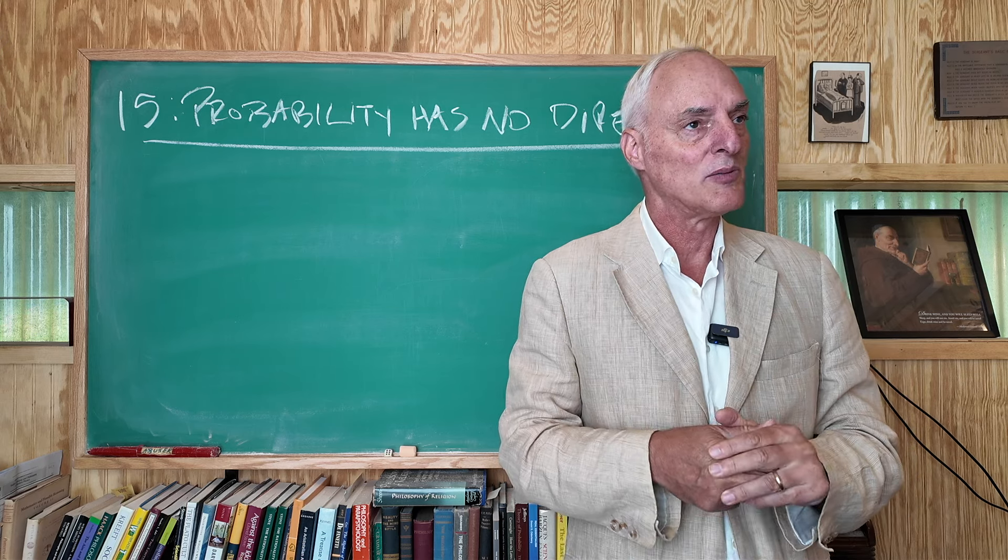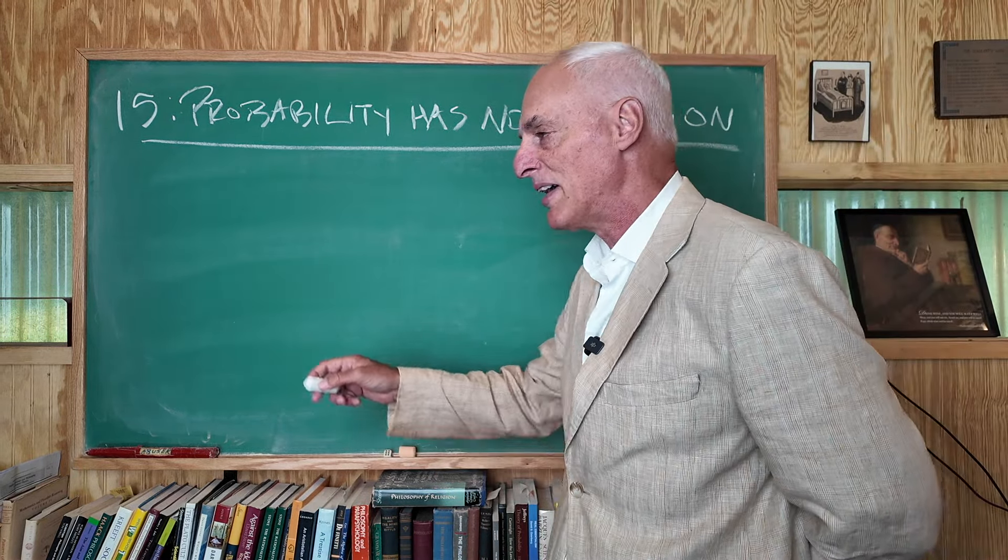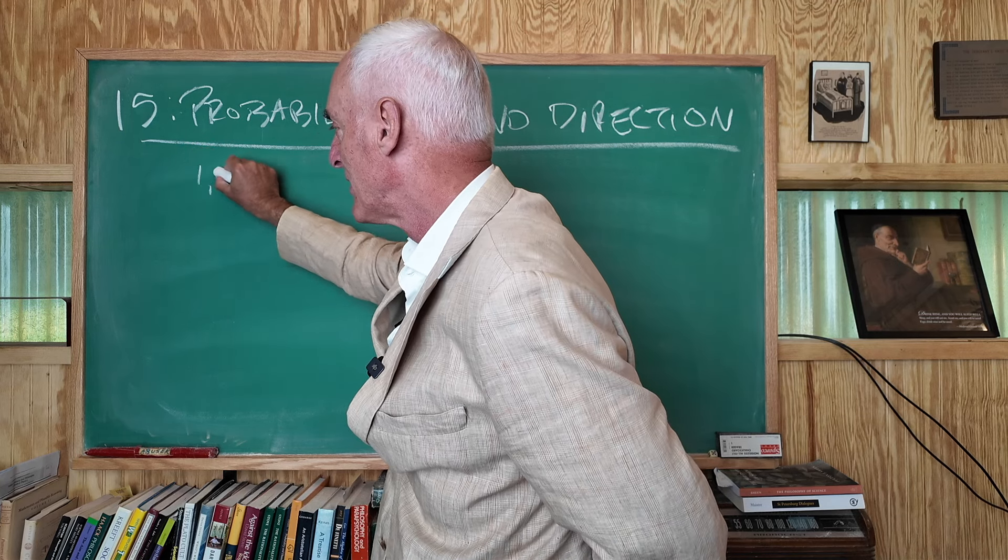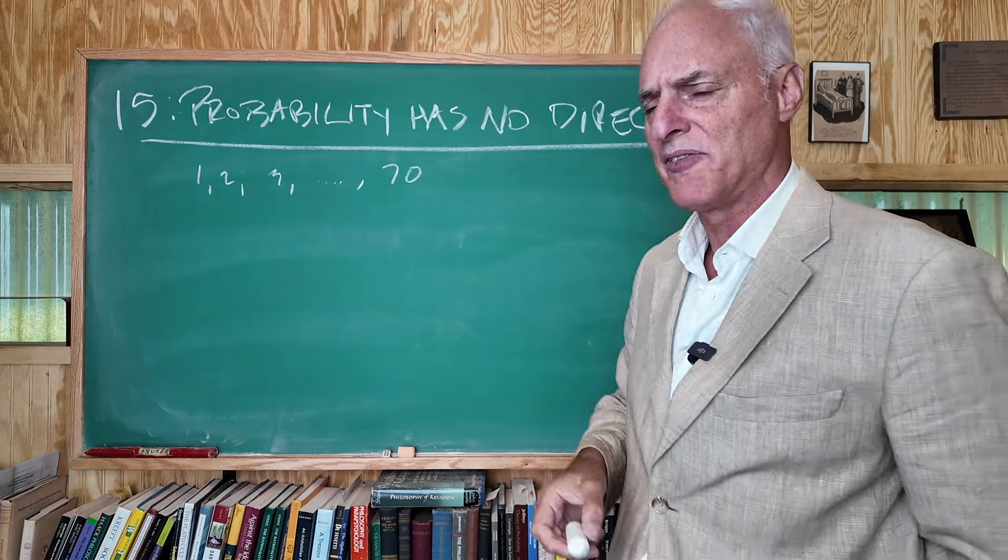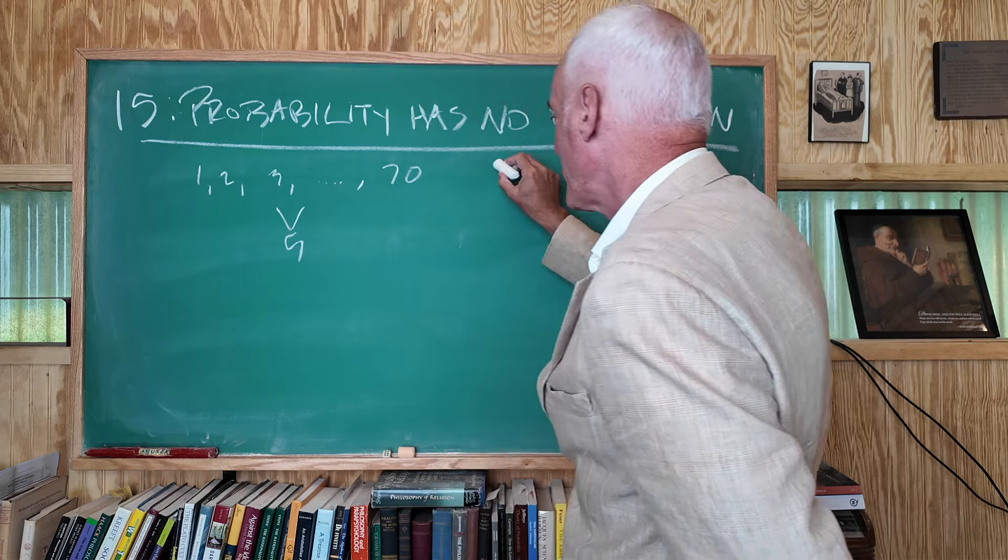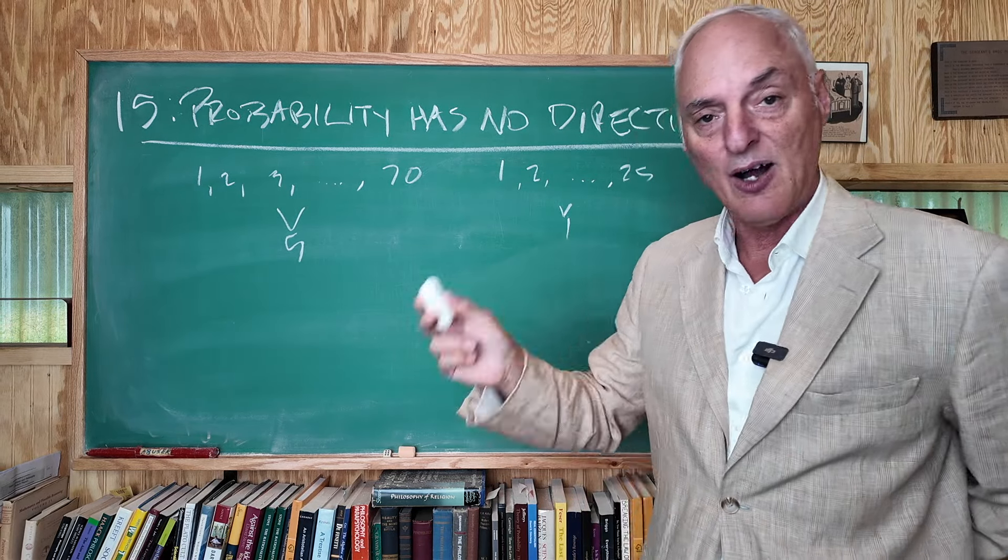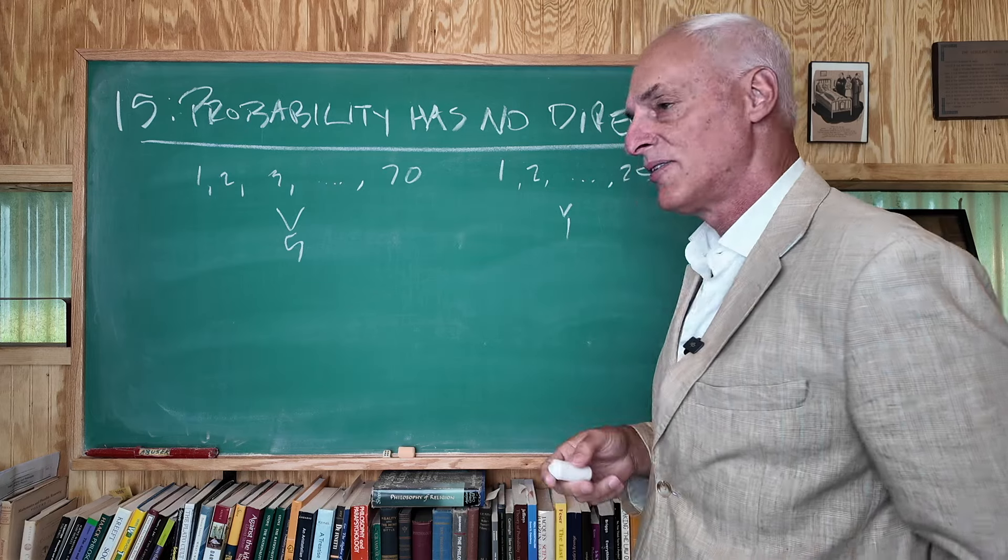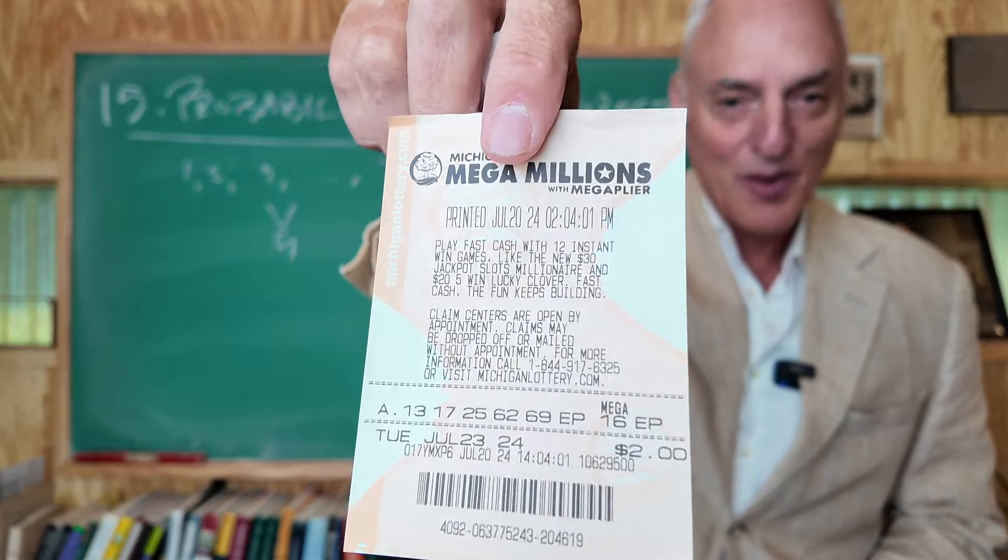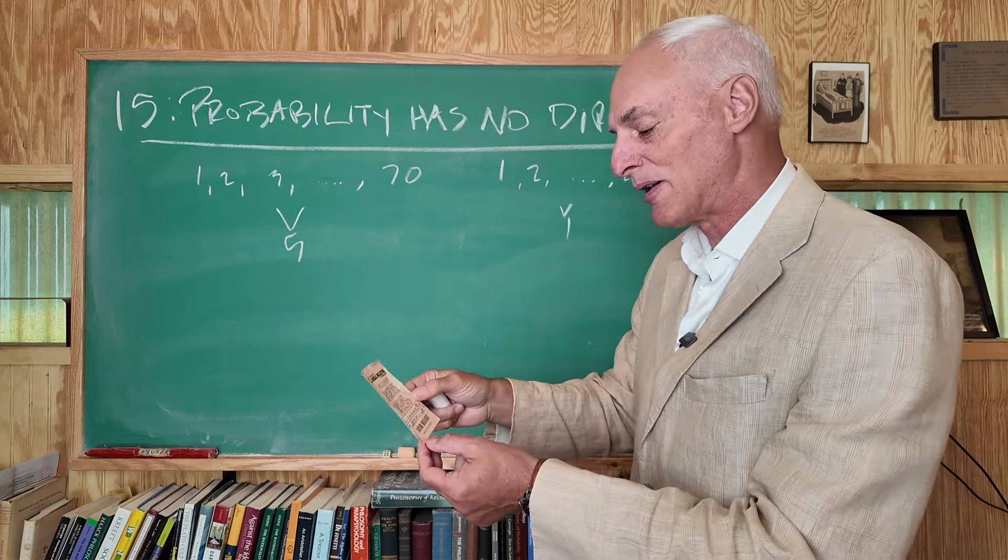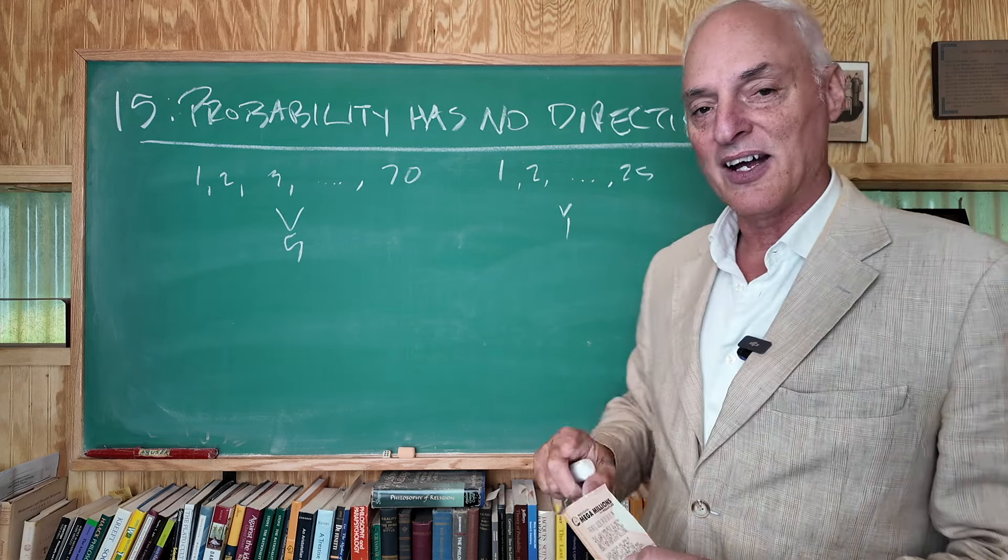So I gave you a homework problem. I said imagine you have 70 objects, one, two, three, four, five, all the way up to 70. And we had to choose five of these objects. And then we had another set of one, two, up to 25, and we had to select just one of these. And I said, how many different ways can we do this? I bought this visual aid here, Mega Millions. This is exactly the structure of this Mega Millions. The probability you win depends on these calculations right here.